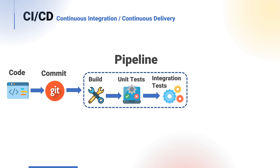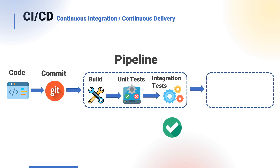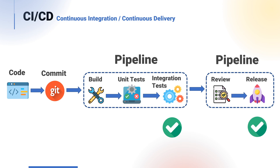In this example we can actually see the code is committed to source version control, shown here with Git, and when this happens the pipeline is triggered. The code is built, unit tests are run, and then integration tests are run on top of that. If this is successful, generally it will then be ready for review and a release, which again could actually be another pipeline.